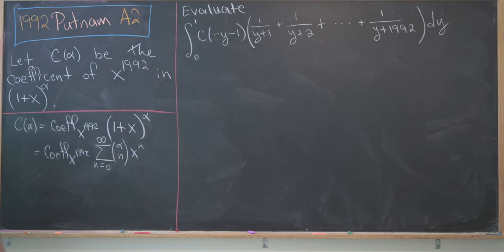That's a straightforward application of the binomial theorem. But now extracting the x^1992 coefficient means that we just need to set n equal to 1992. So this is going to be (α choose 1992).